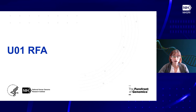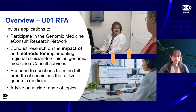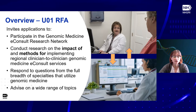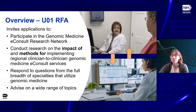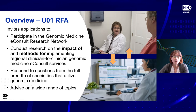Now I'd like to talk specifically about the U01 RFA. This RFA invites applications for sites to participate in the Genomic Medicine eConsult Research Network. Awarded sites will conduct research on the impact of and methods for implementing regional clinician-to-clinician genomic medicine eConsult services. We are requiring that they respond to questions from the whole breadth of specialties that utilize genomic medicine — from what test should I order, to what do my test results mean, to what do I do next. Services cannot be limited to just cancer or just metabolic disease.